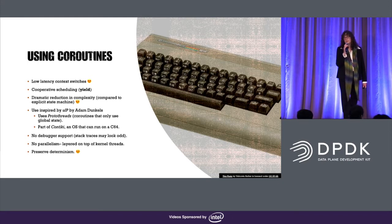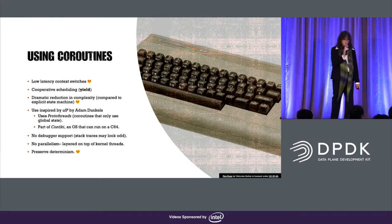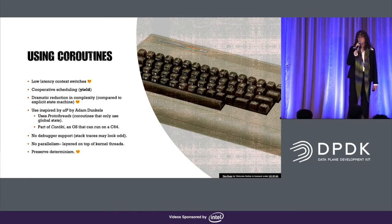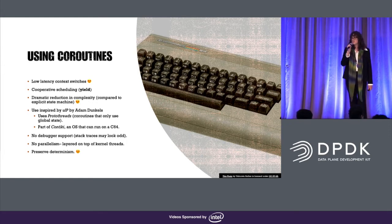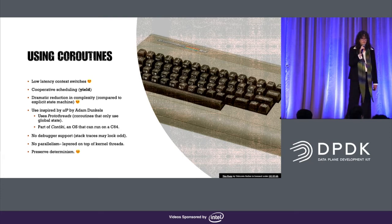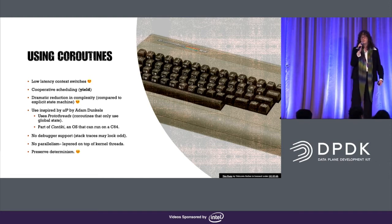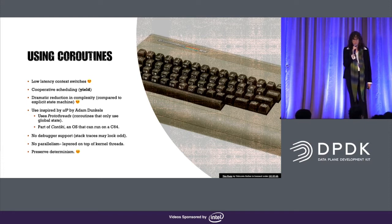So, coroutines. The nice thing about coroutines is they have low latency context switches, as opposed to kernel threads, which have a quantum of about 12 milliseconds — way too high for us. Coroutines use cooperative scheduling, and in Rust this is handled by the yield keyword. Coroutines ended up being a dramatic reduction in complexity compared to explicit state machines, which is really useful for me because I tend to think in thread-like abstractions rather than state machines. I was inspired to use coroutines by MicroIP, which was developed by Adam Dunkels.